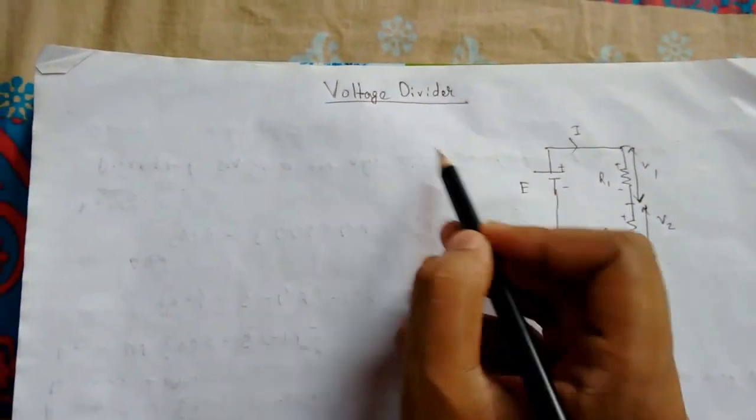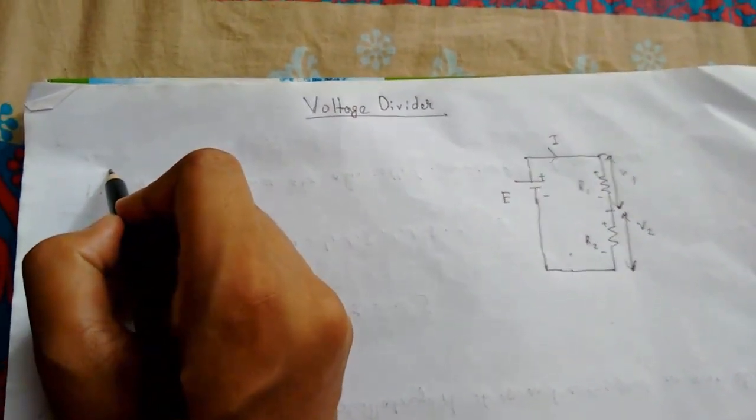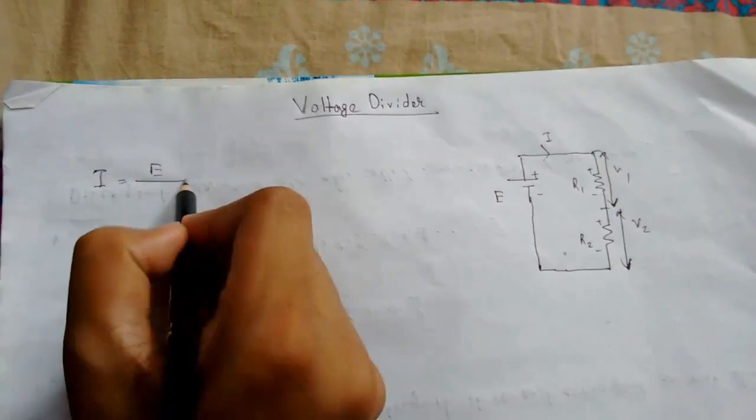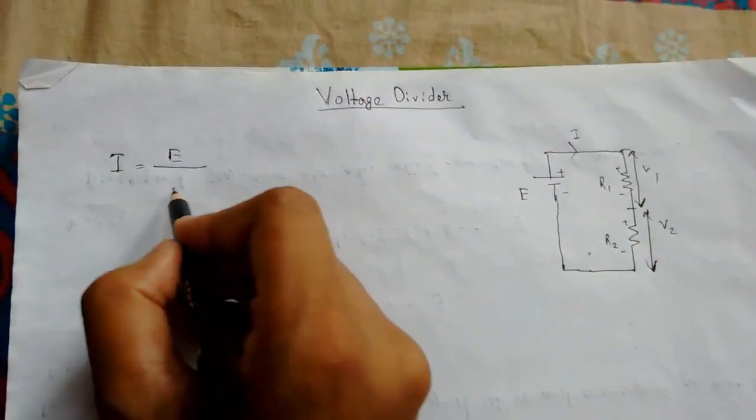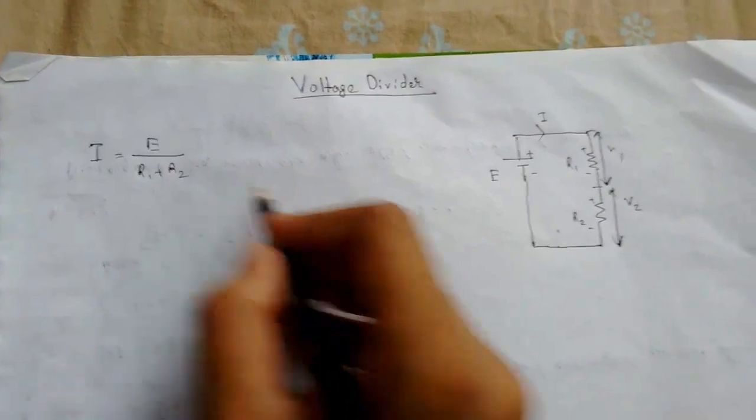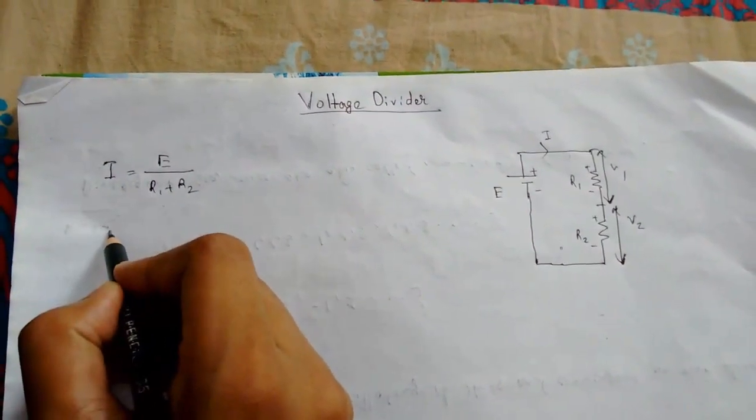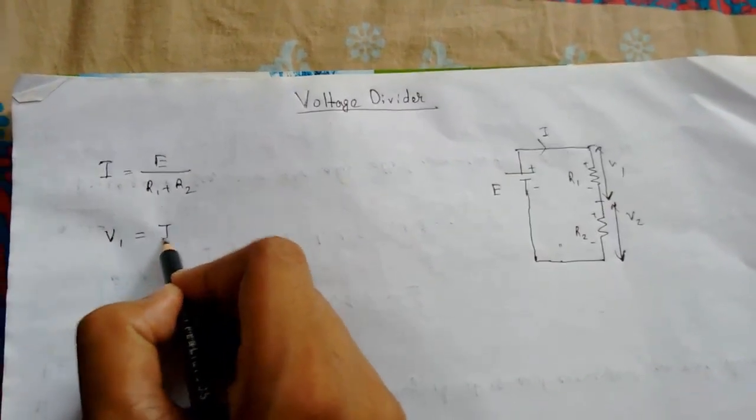First, to use voltage divider rule, we need to calculate the total current. The total current will be total voltage upon total equivalent resistance. Here both resistances are in series, so R1 plus R2. This is the total current.